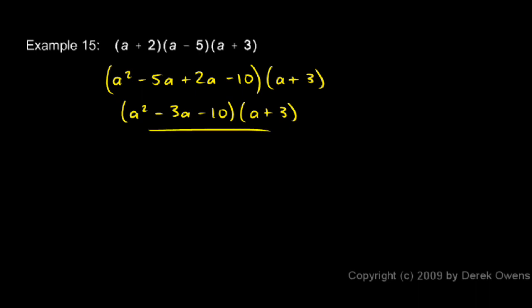Now this I know how to do. I just have to take each term in the first one and multiply by each term in the second one. So I'll do this systematically. I'm going to start here with the a squared. And I'm going to multiply a squared times a. That gives me a cubed. And a squared times 3. That gives me 3a squared.